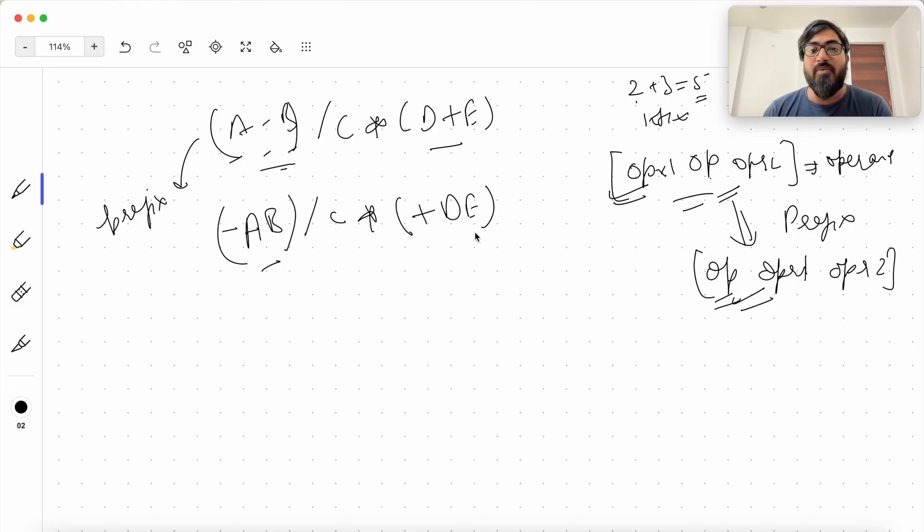Which means this is also an operand and this is also an operand. So we keep doing this till we cover all the operators. Next is this. Slash C, division C will happen first and then into will happen. So this is operand 1, this slash is operator, this is operand 2.